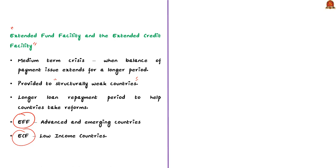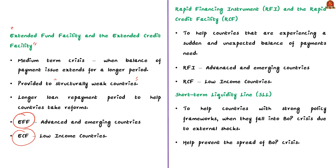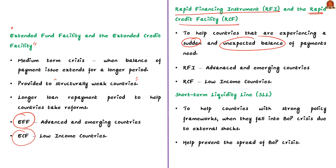In 2019, Pakistan used the Extended Fund Facility to get financial support from the IMF. For urgent BOP needs, the IMF has the Rapid Financing Instrument and Rapid Credit Facility. Note that this RCF appeared in the 2022 Preliminary Question. Both are designed to provide funding to countries experiencing a sudden and unexpected BOP crisis. The RFI is mainly used by advanced and emerging economies, and the RCF is mostly used by low-income countries.